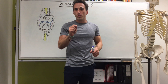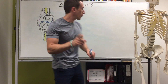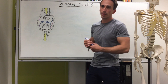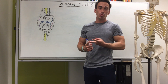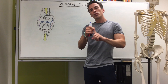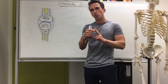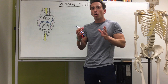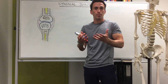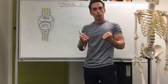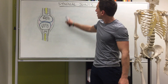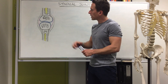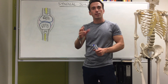Now let's have a look at the synovial joints. Firstly, what is a synovial joint? You can have fibrous joints, cartilaginous joints, and synovial joints. The first two — fibrous joints and cartilaginous joints — are quite immobile, sometimes fully or partly immobile. But when we start talking about freely movable joints, what we're referring to are the synovial joints, which have very specific and particular characteristics.